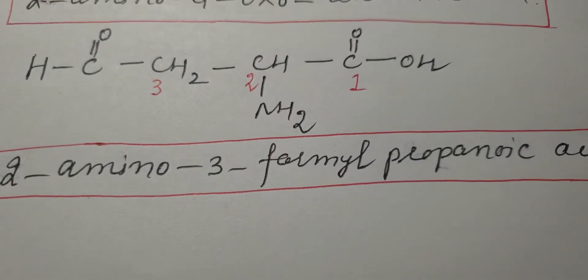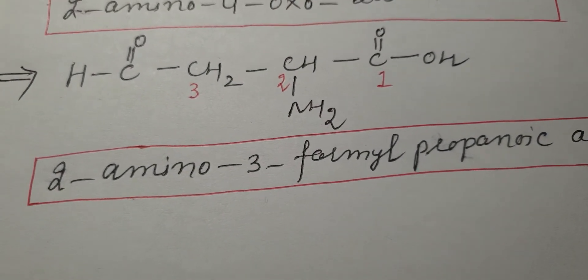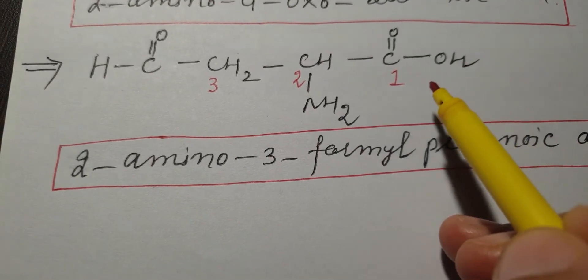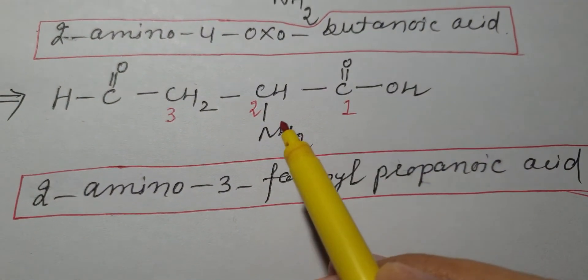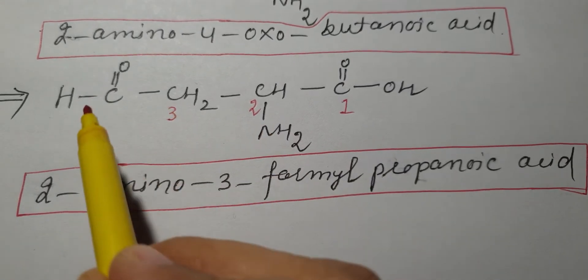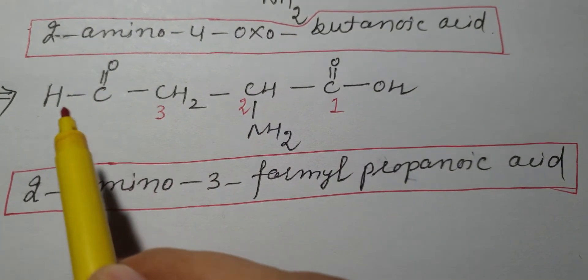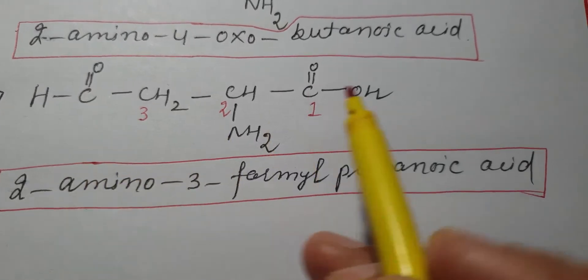Here I have taken a compound which contains multiple functional groups: at position 1, this is carboxylic acid, amine, and CHO which is aldehyde group.